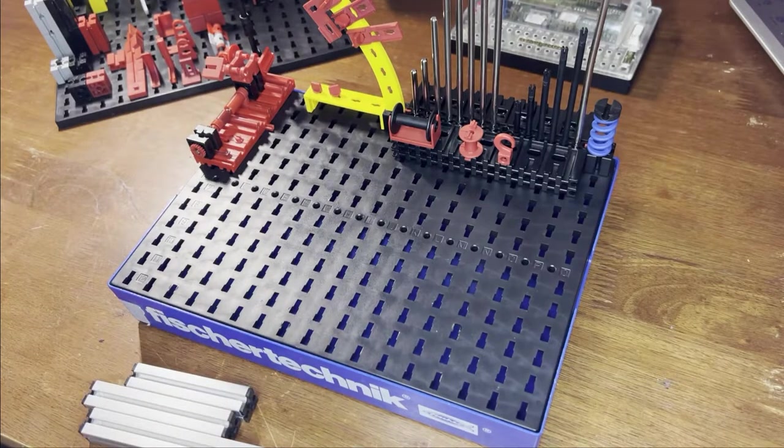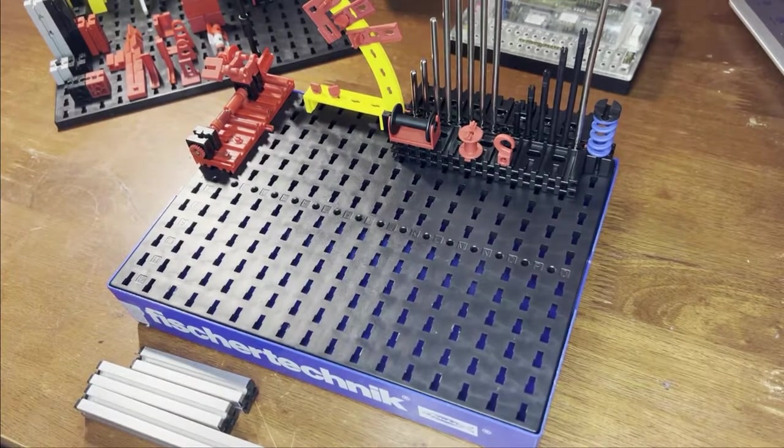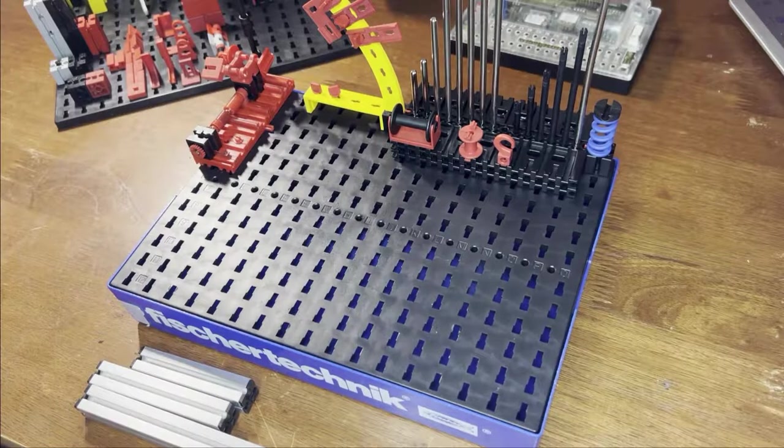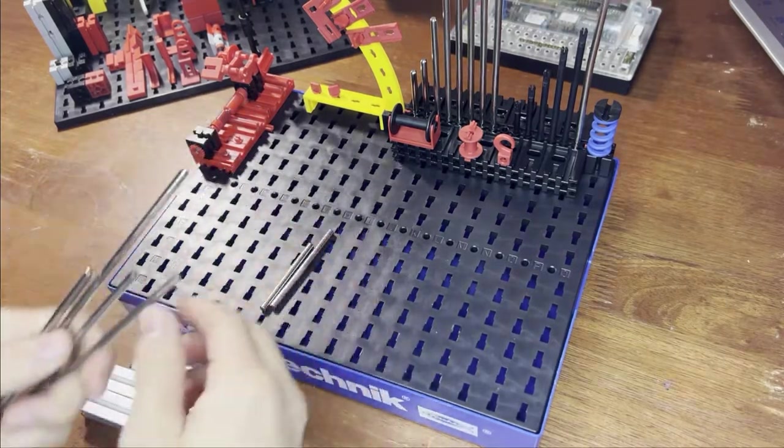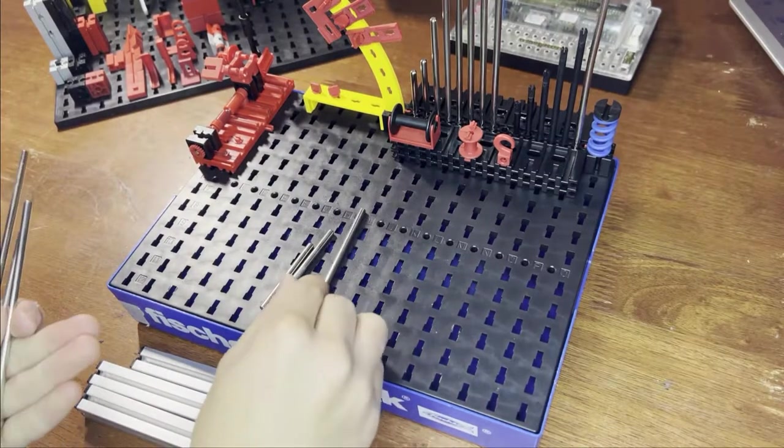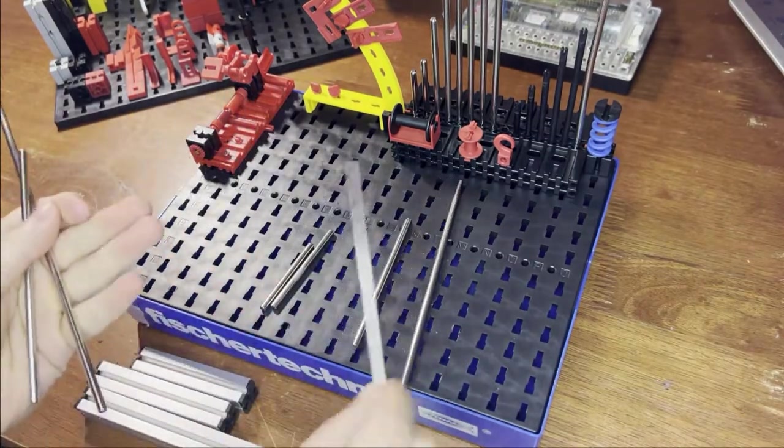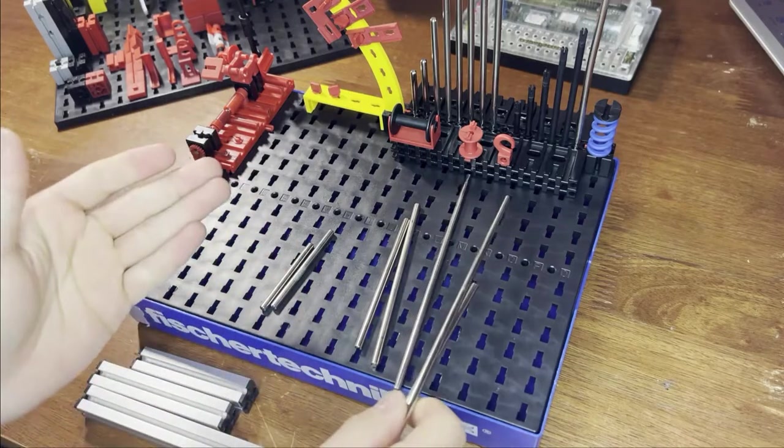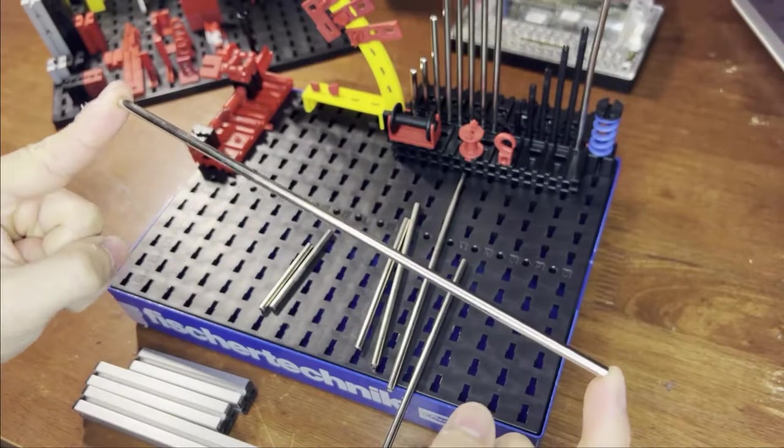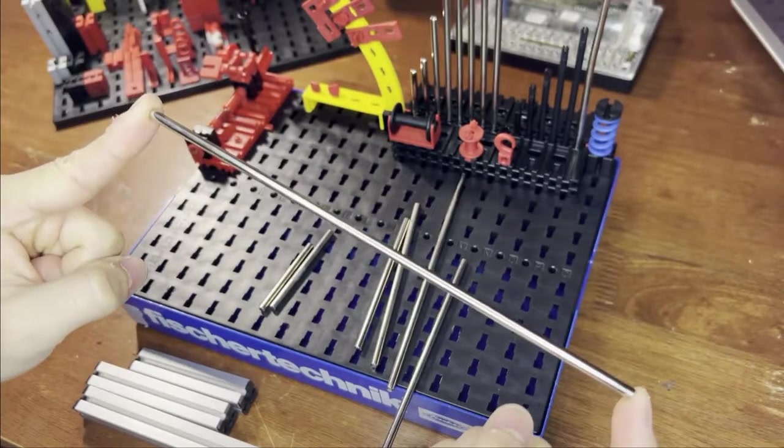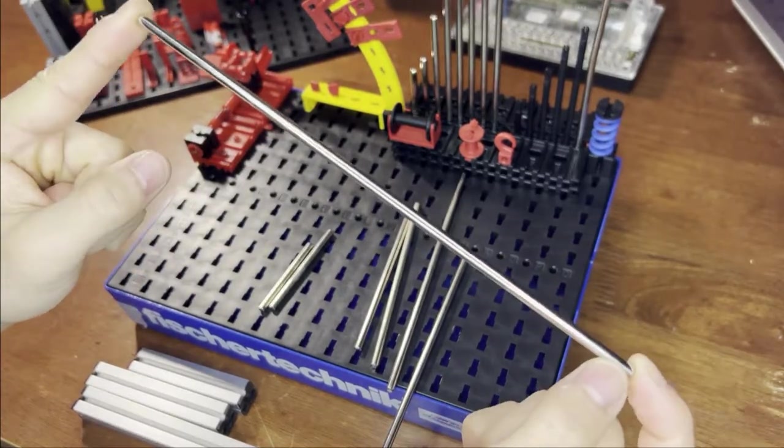With that being said, I want to first introduce you to the main element that you'll be using with your Fischer Technik components, which is these axles. Now, these axles can range in length from 30 millimeters to even 260, but I don't have a 260. Probably the closest I have is this one right here, which is maybe 200 centimeters.